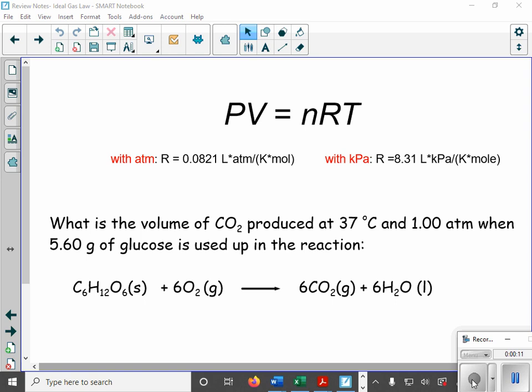Now it says, what is the volume of carbon dioxide produced at 37 degrees Celsius and one atmosphere of pressure when 5.60 grams of glucose is used up in the reaction? And I've given you the chemical reaction there. Glucose plus oxygen yields carbon dioxide and water.